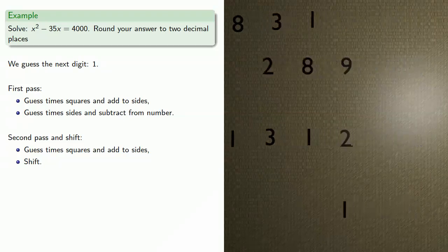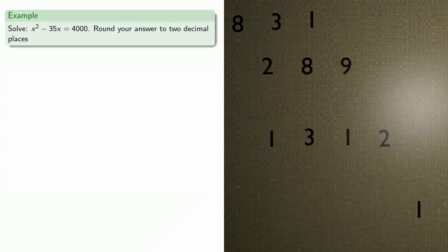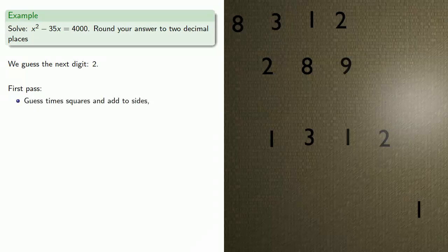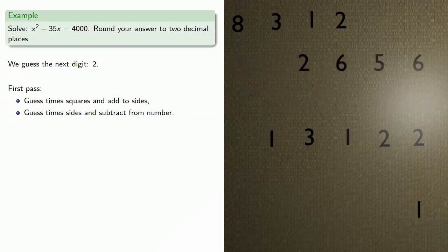We move everything over so we have enough room to shift, then move the sides one place and the squares two places. We guess the next digit: 2. First pass — guess times squares and add to sides. Then guess times sides and subtract from number. We have now found the solution to two decimal places: 83.12. We should set up for the next place anyway, so we engage in our second pass.